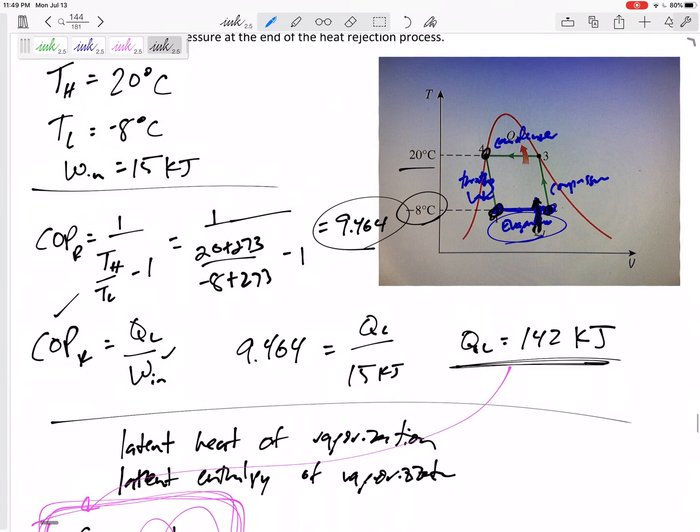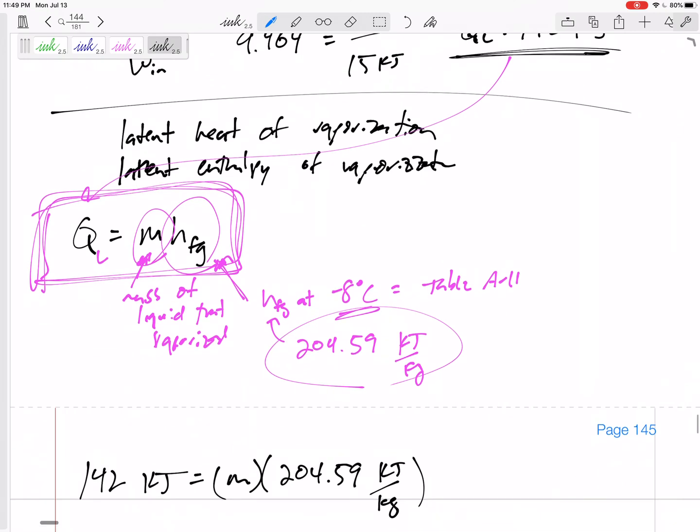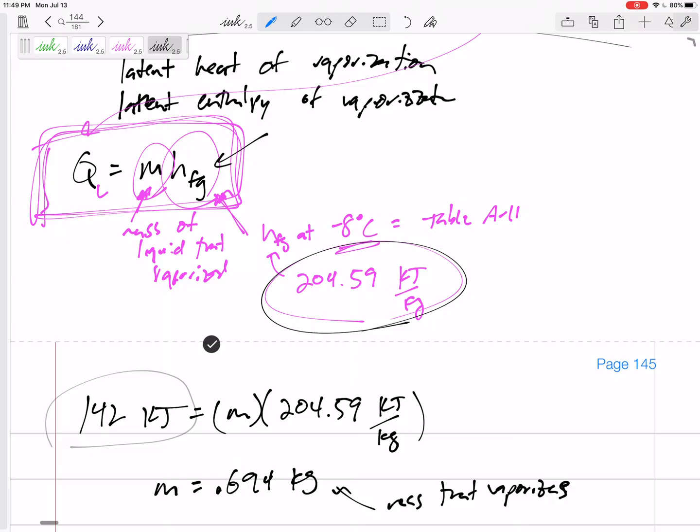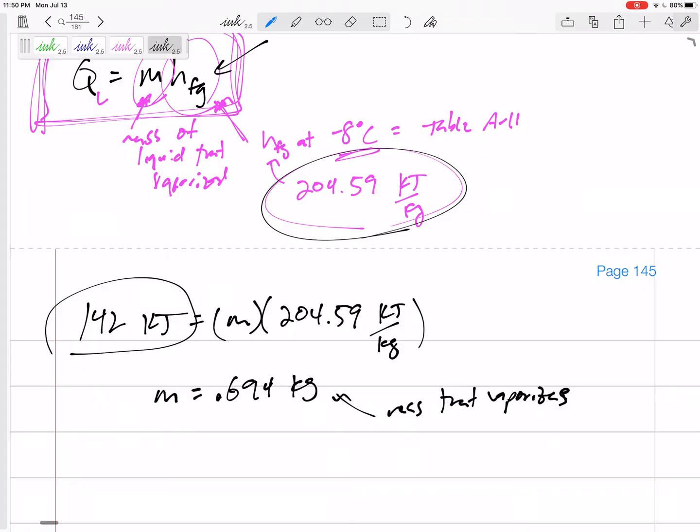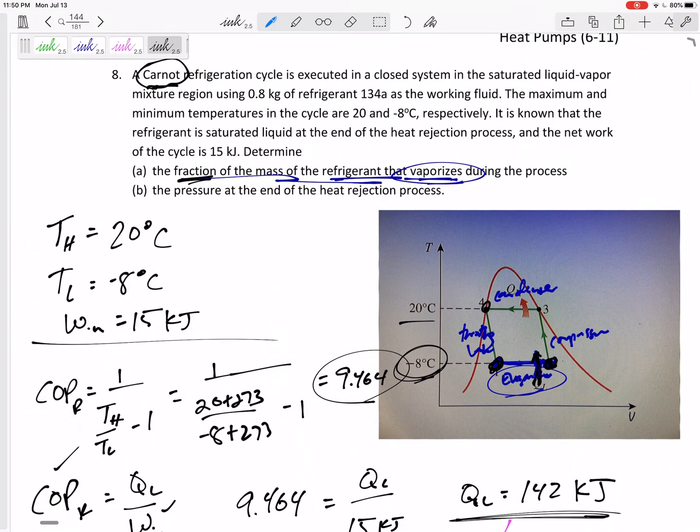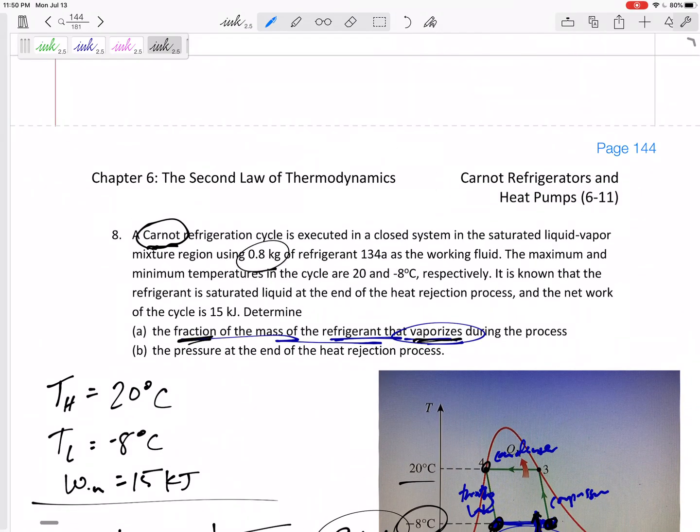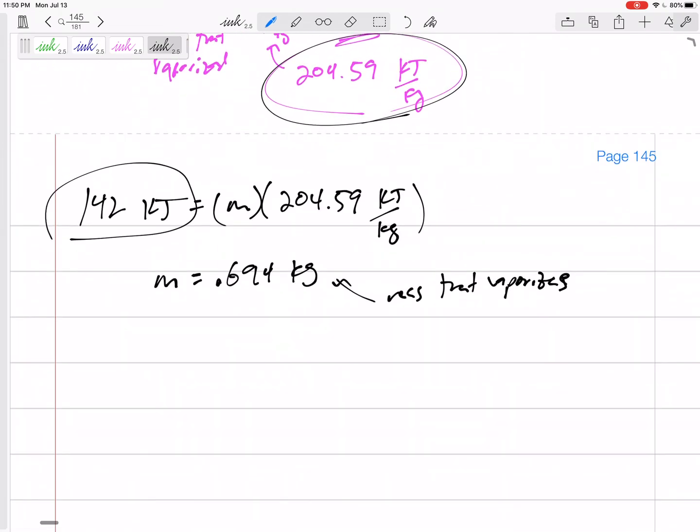Let me explain this one last time. It's staying at -8°C. Some of it is going from liquid to vapor. Every bit that goes from liquid to vapor needs to accept 204.59 kilojoules per kilogram. If it accepts 142 kilojoules total, then 0.694 kilograms accepted that 204. The question asks for the fraction of the mass that vaporizes out of the total 0.8 kg. So 0.694 over 0.8 equals 0.868, or 86.8 percent of the mass vaporizes when it accepts that QL.